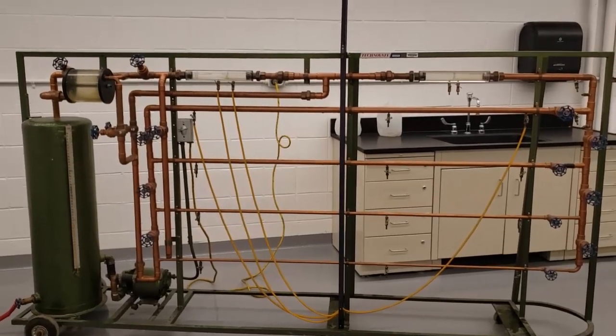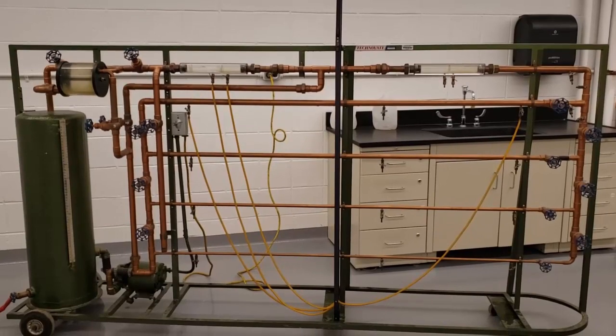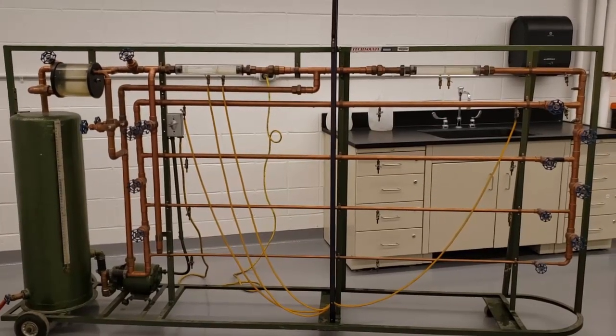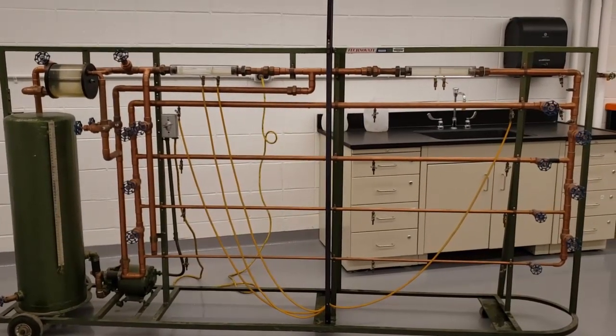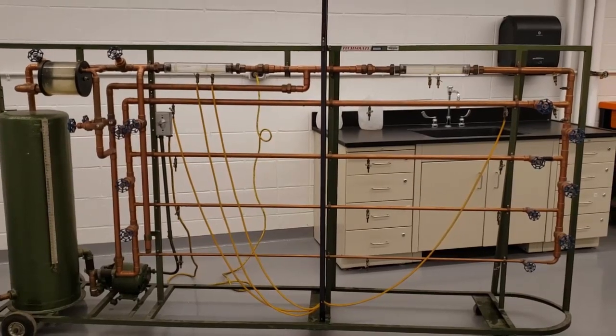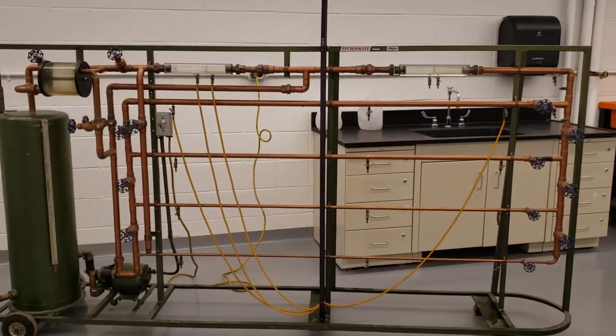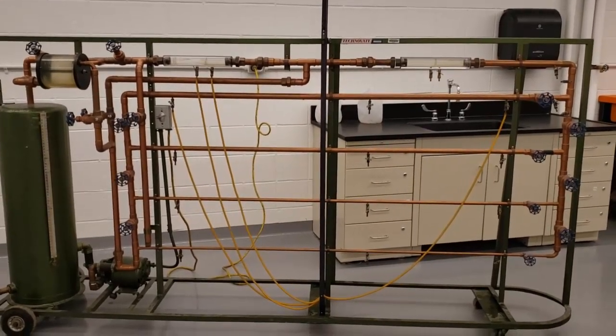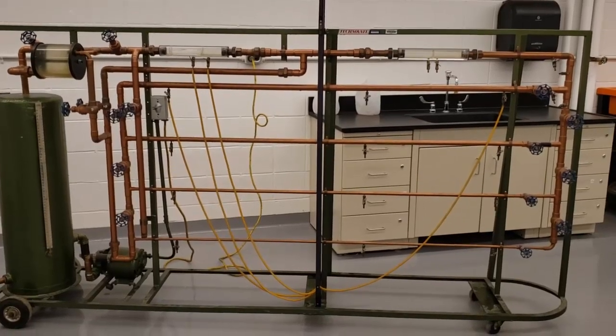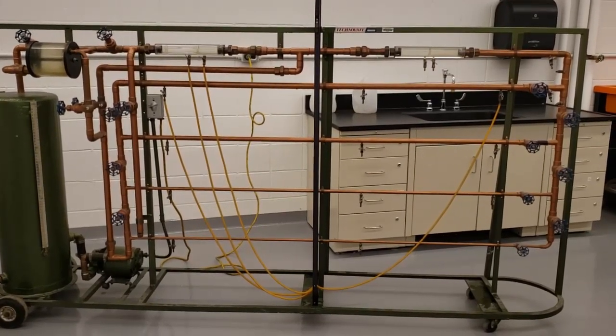Experiment number seven is loss of head in a circular pipe. And the purpose of this experiment is to determine the loss of head due to friction in the circular pipe. As we previously mentioned when we talked about the overall apparatus, this apparatus has four different pipe diameters.